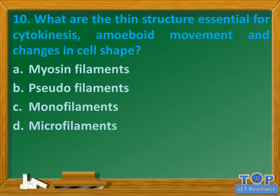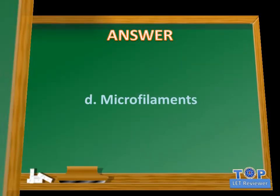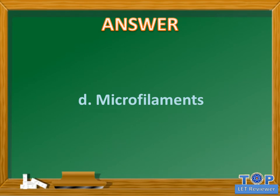Question number 10. What are the thin structures essential for cytokinesis, amoeboid movement, and changes in cell shape? A. Myosin filaments. B. Pseudo filaments. C. Monofilaments. D. Microfilaments. Answer: D. Microfilaments.